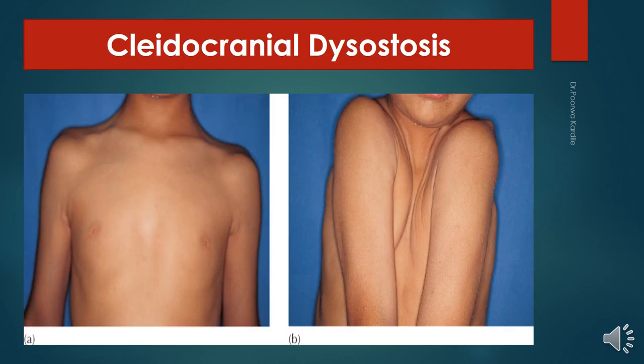This slide is of cleidocranial dysostosis. It is a birth defect where the autosomal dominant RUNX2 gene is affected, which is involved in the formation of bone.